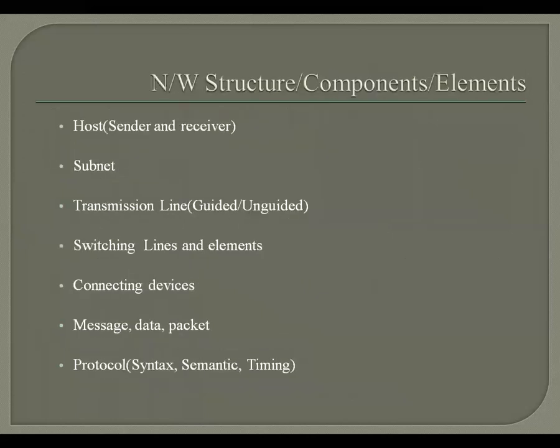Moving to the next slide, we'll discuss the components and structure of a network — how the network looks and how it is built. The first element is the host, which can be a sender, a receiver, or any intermediate node — defining where information comes from and where it goes. The next element is the subnet. Since the size of a network can be very large with everyone connected, the network is divided into subnets — small networks collected together — to keep track of the overall network.